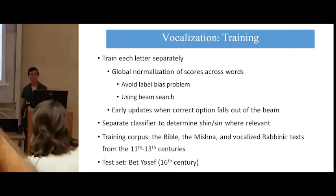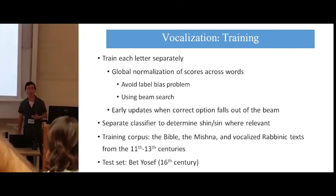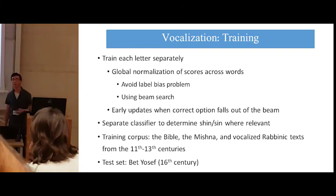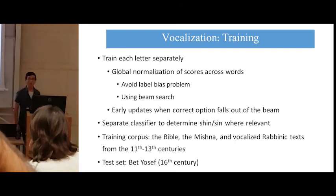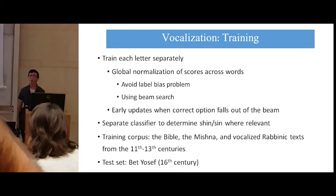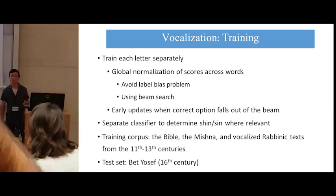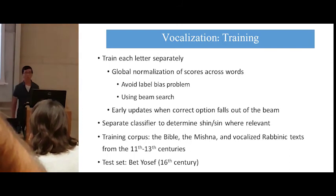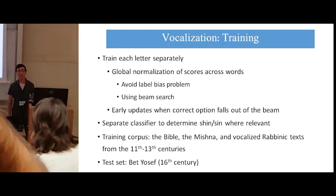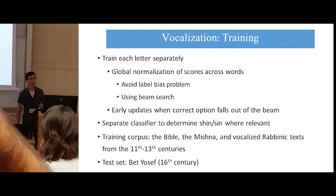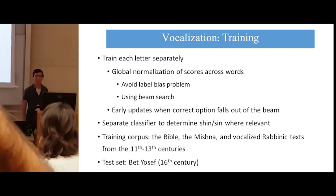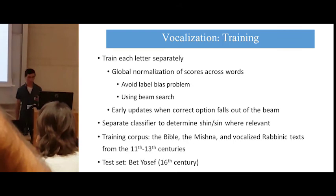During training, when the correct option falls out of the beam, we perform an early update. Whenever we encounter a shin or a sin, we train a separate classifier to determine which it is. Our training corpus consists of the Bible, the Mishnah, and various vocalized rabbinic texts from the 11th to 13th century. Our test set is the Beit Yosef from the 16th century. Although the genres are overall similar between the test set and the training corpus, the writing styles are very different.